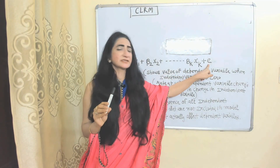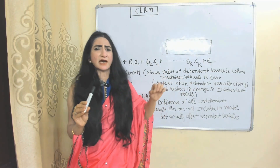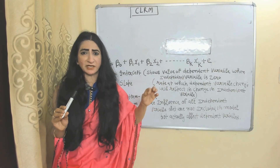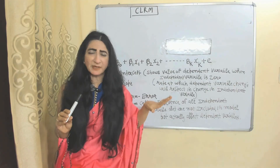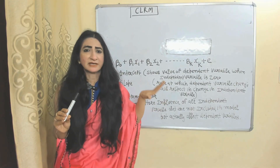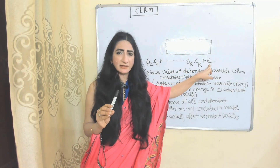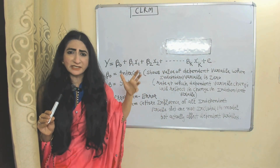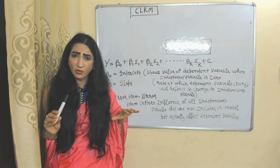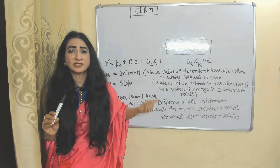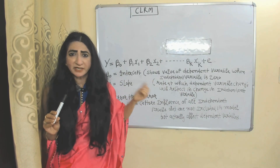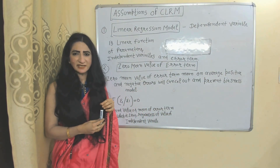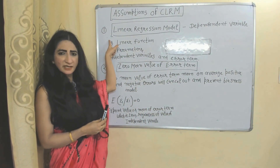E represents the error term. In reality, it is not possible to capture all independent variables which influence the dependent variable. That's why we include the error term — because it captures the influence of all other independent variables not included in the model but which actually affect the dependent variable.